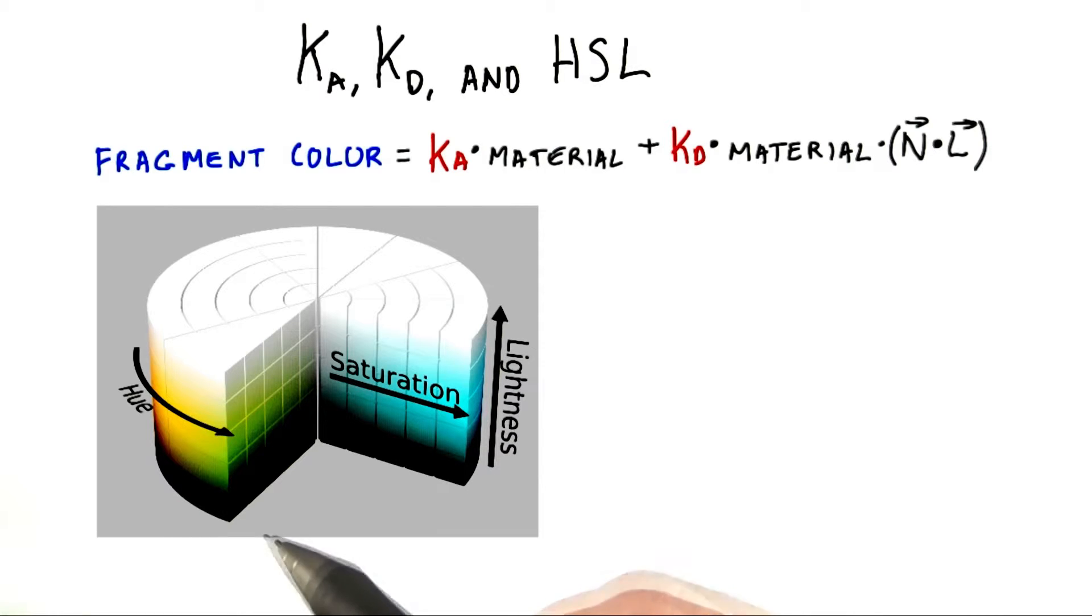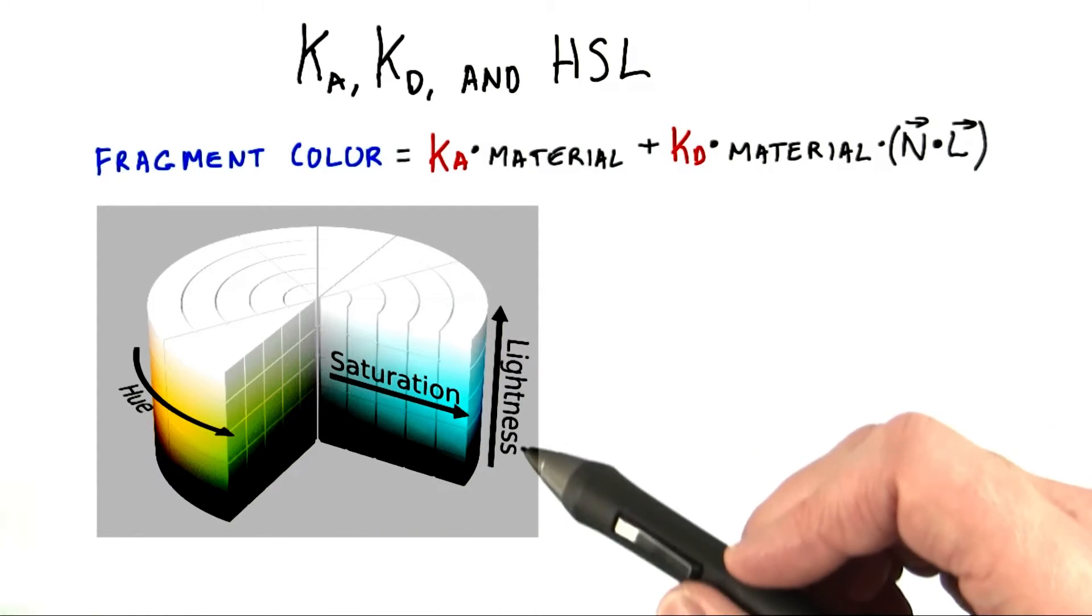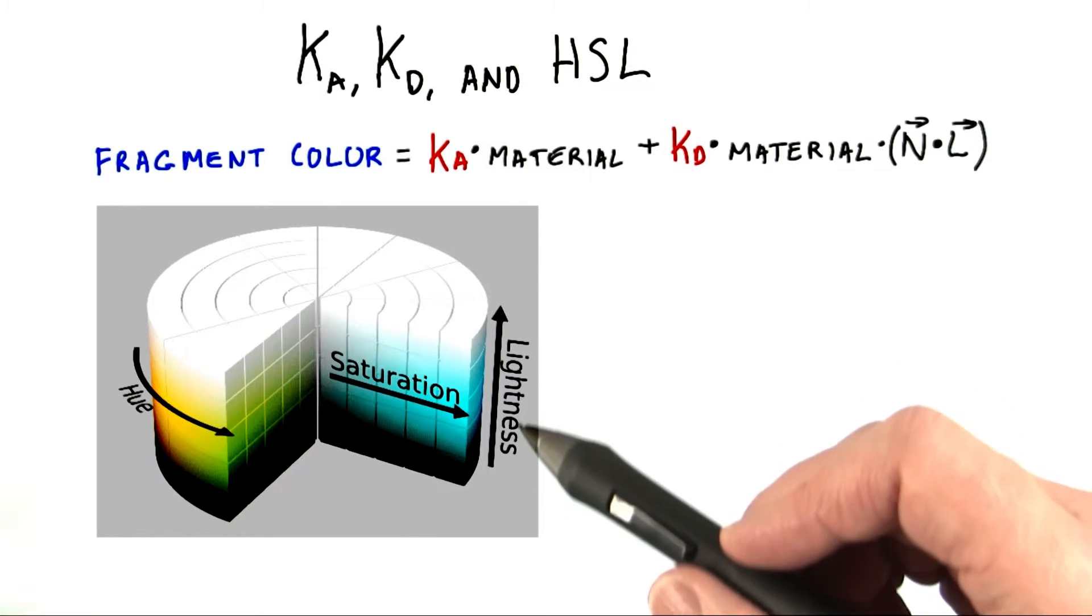Hue means the color, essentially. Saturation is how much the hue is used. Lightness is a scale factor, letting you easily make the color itself brighter or darker.